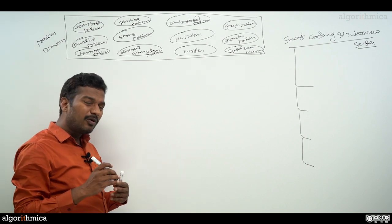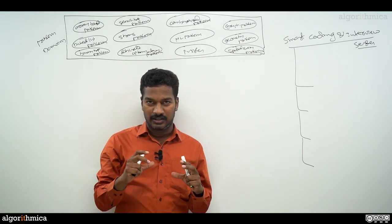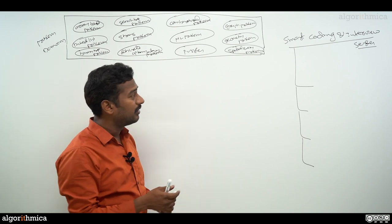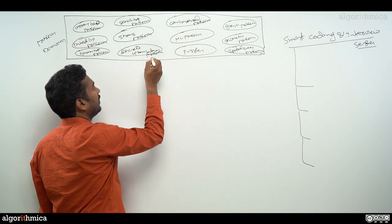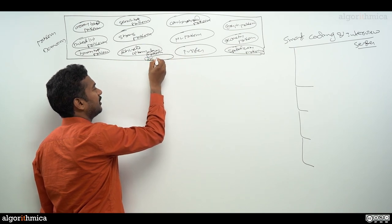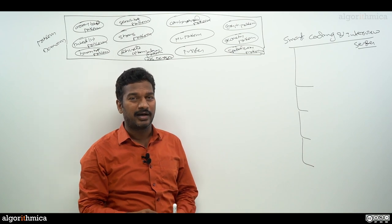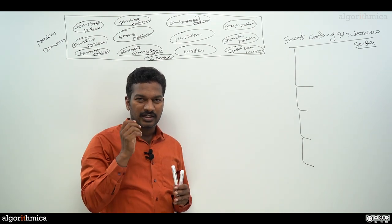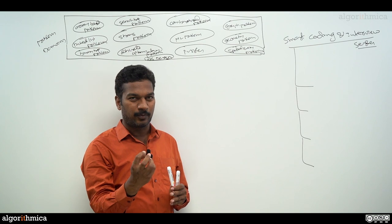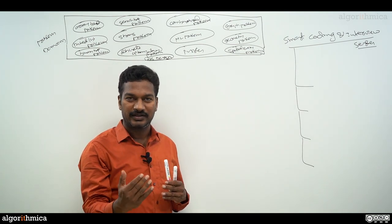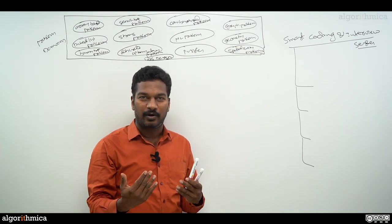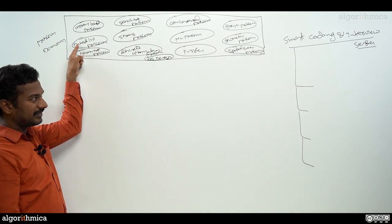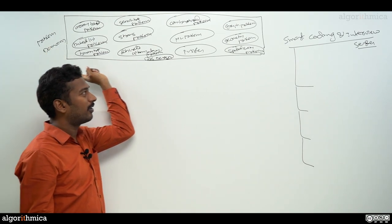Whenever you want to solve a problem on any of those websites, you need to understand which category the problem belongs to. Some problems will be data structure design. So whenever you want to learn anything, first pick up the problem, understand the problem, then start working towards how you attack it. If you don't have the skill to solve the problem, try to master or hone that skill. The first thing to do in this series is pick the problem from any of these domains.